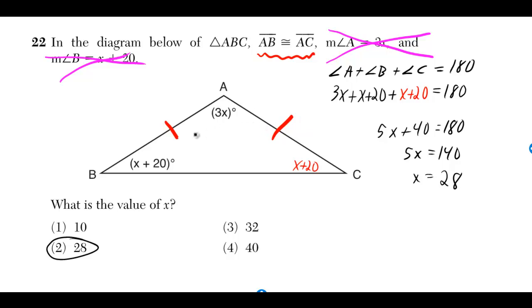And the isosceles triangle theorem states that the angles across from the equal sides, they're also equal. So that's why angle C is also x plus 20.